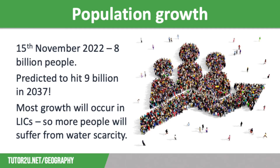However, we need to remember that the countries with the highest level of population growth are those countries already struggling with water resources and already experiencing food, water and energy insecurity. Therefore, population growth is likely to lead to more people suffering from water stress as the demand for water for domestic use increases. Countries with the lowest gross national income, or GNI, per capita also tend to have the highest fertility rates. This means that global population growth is mainly concentrated in the poorest countries, usually in sub-Saharan Africa. In fact, population growth across the whole of Africa is 2.5% per year on average, compared to just 0.1% in Europe.